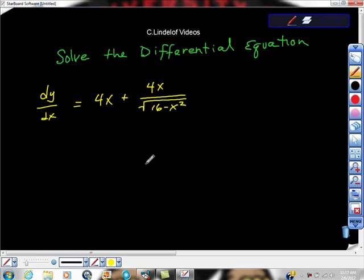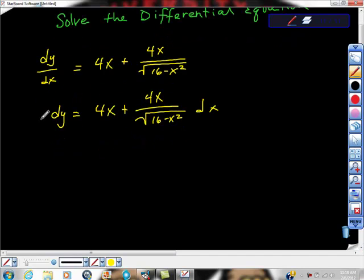The first thing I'm going to do is multiply both sides of this equation by dx. So now we have dy = (4x + 4x/√(16-x²))dx. From here, we're allowed to start. We're going to take this and say ∫(4x + 4x/√(16-x²))dx. From here, we're going to start doing a little bit of work and breaking this thing out.